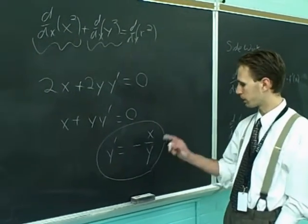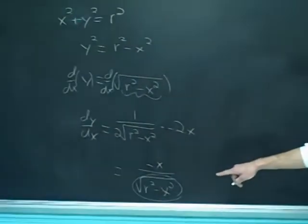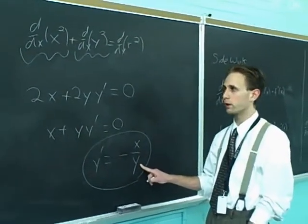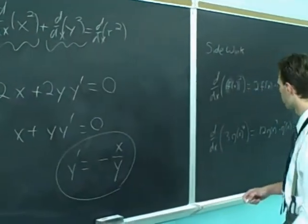So you'll have y prime equals minus x over y. All right. So we found y prime to be this, which actually does match the thing that we got from doing it explicitly. They just, it's just in terms of y as well. That's what usually happens when you differentiate implicitly. You have y's floating around in there.